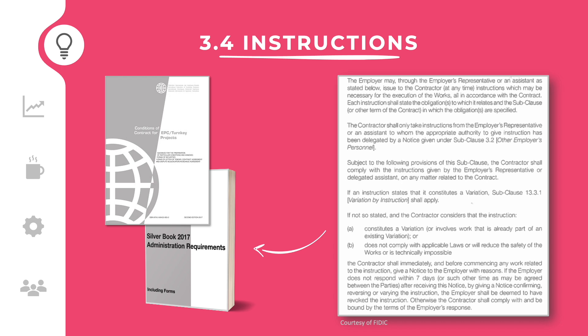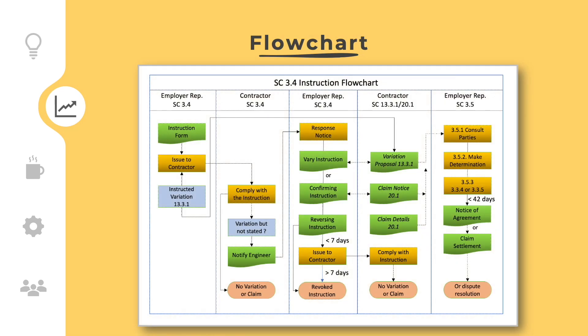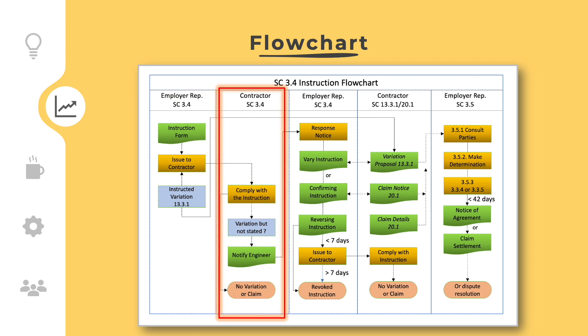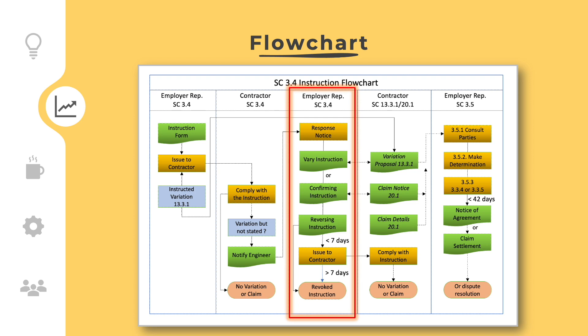In the next section, we will explain the instruction process on a flowchart. The instruction process starts with the employer's representative who must prepare the instruction. The employer's representative shall clearly indicate whether the instruction is a variation or not. The contractor shall review the instruction and notify the employer's representative if they think that the instruction is a variation or has any other objections. If there are no objections, then the contractor must comply with the instruction. The employer's representative must respond to the contractor's notice within seven days.